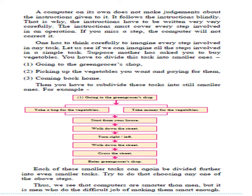Suppose mother has asked you to buy vegetables. You have to divide this task into smaller ones: going to a grocery shop, picking up the vegetables you want, paying for them, and coming back home. Then you have to subdivide these tasks into still smaller ones — for example, take a bag for the vegetables, take money, start from your home, walk down the street, turn right or left, cross the street, enter the grocery shop. Each of these smaller tasks can again be divided further into even smaller tasks.